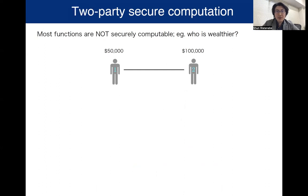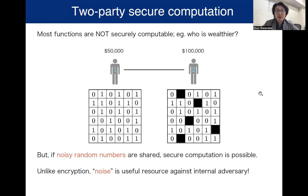For the two-party setting, most functions are not securely computable. For instance, we cannot compare who is wealthier among the two parties. However, if we assume that noisy random numbers are shared between the parties, then for any function, secure computation is possible. So unlike the encryption problem, noise is a useful resource against an internal adversary, which is quite interesting.